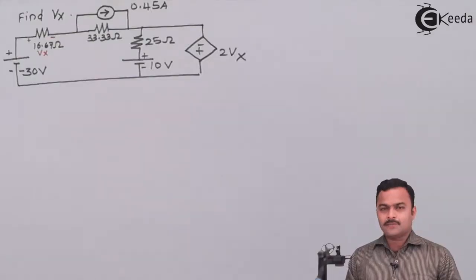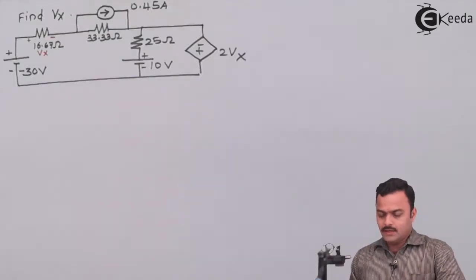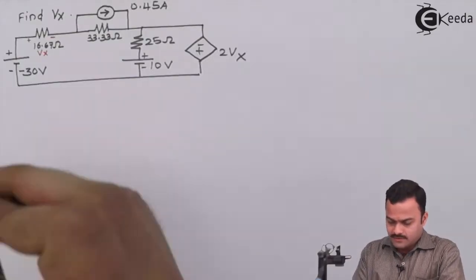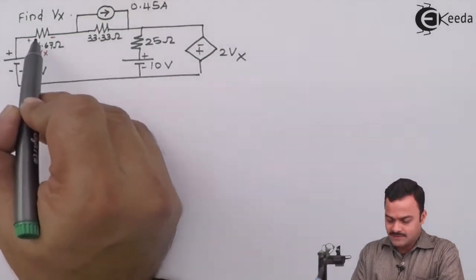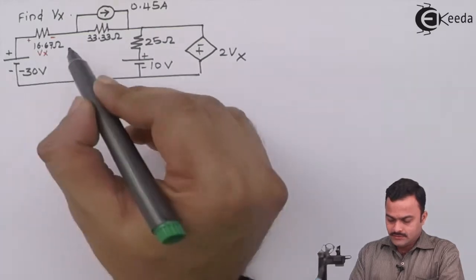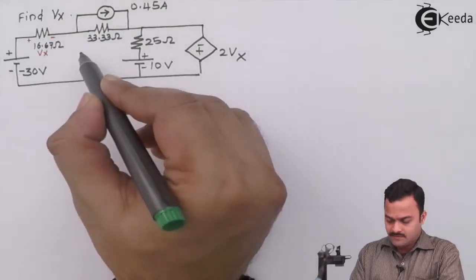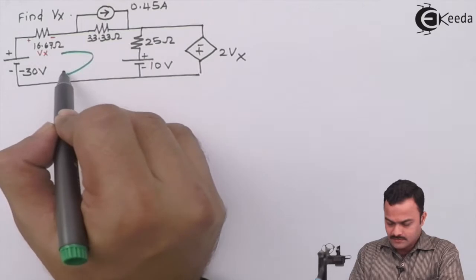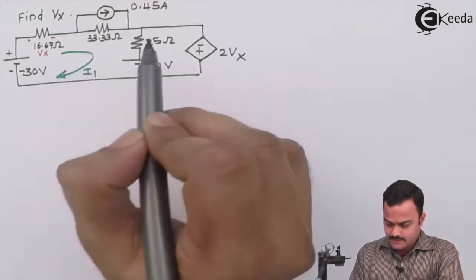So here is the problem. We have to get vx, the voltage specified by them, by using mesh analysis. It's clear cut we will be having three meshes. Let's mark the mesh currents, so i1, i2, and over here we say it's i3.